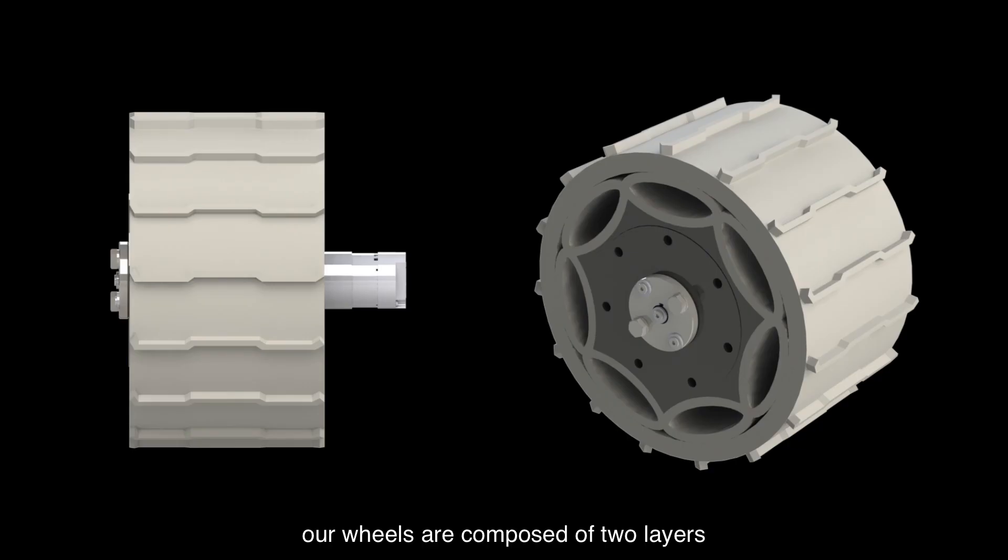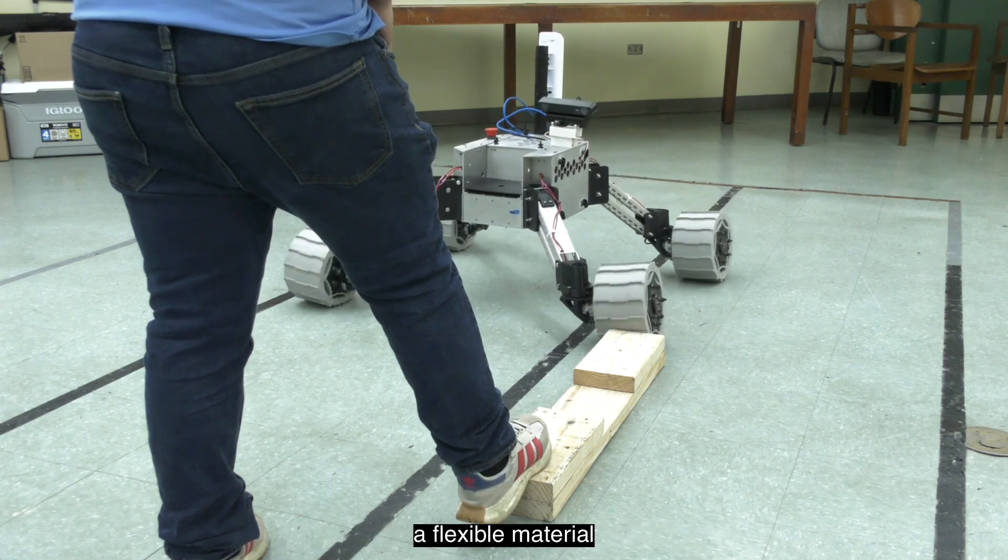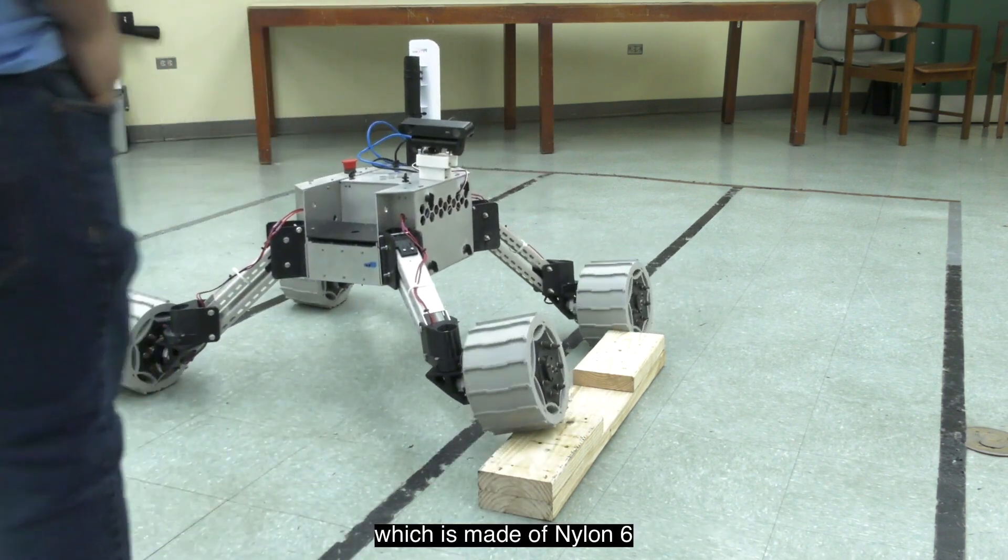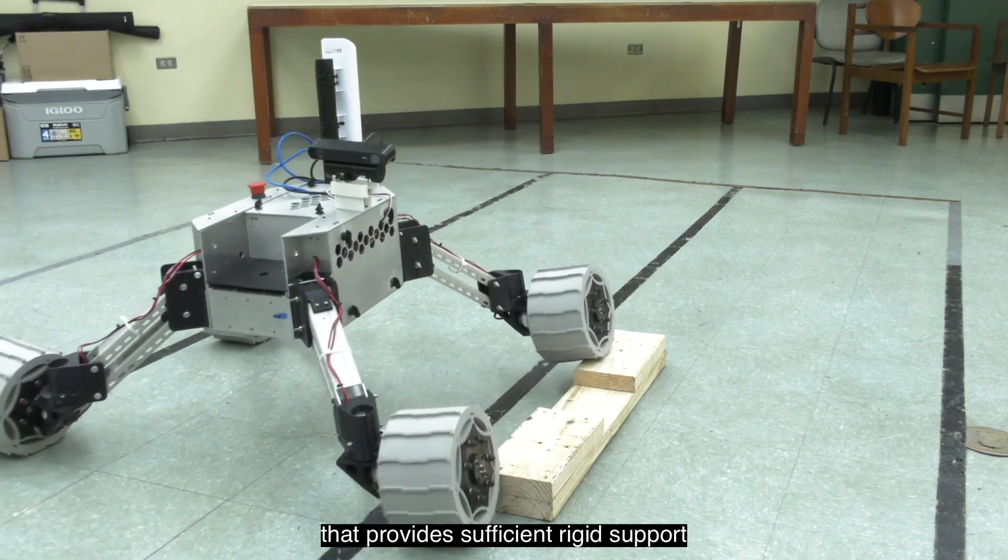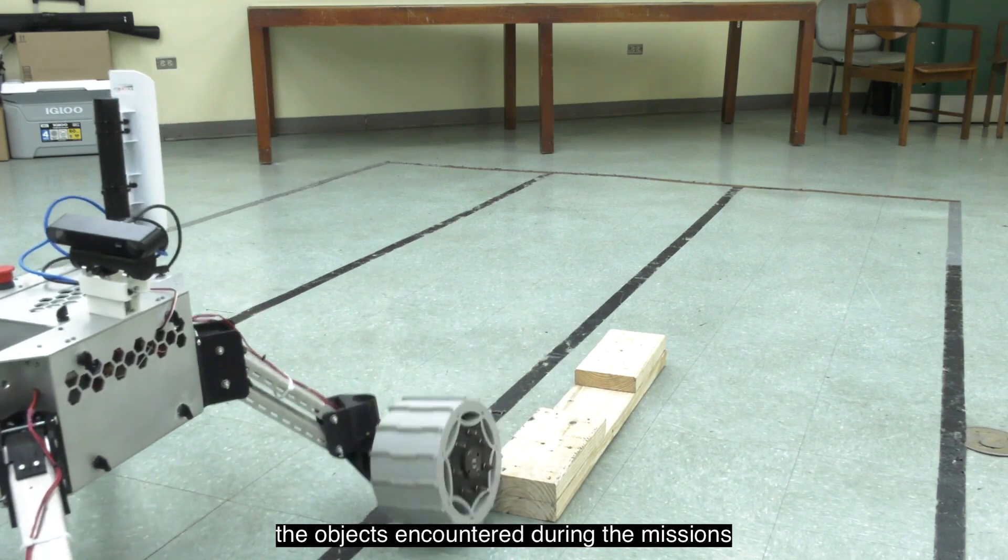Our wheels are composed of two layers. The outer layer comprises an airless tire constructed from thermoplastic polyurethane, a flexible material enabling deformation for overcoming obstacles, and an interior layer which is made of nylon six that provides sufficient rigid support that enables the outer layer to adapt to the objects encountered during the missions.